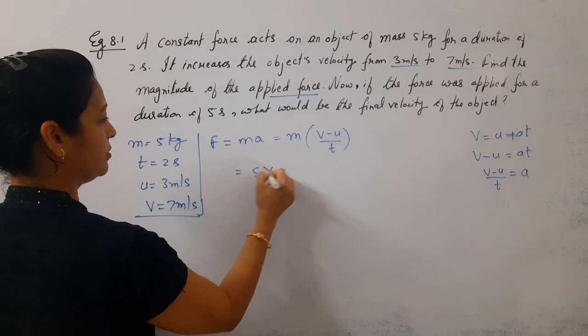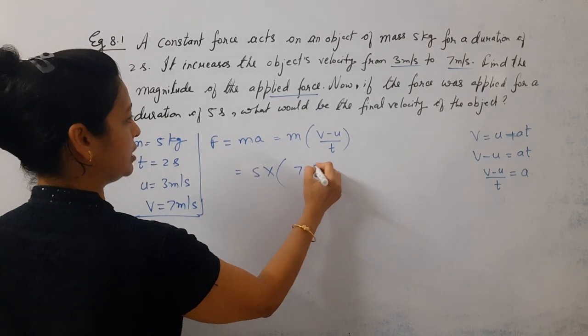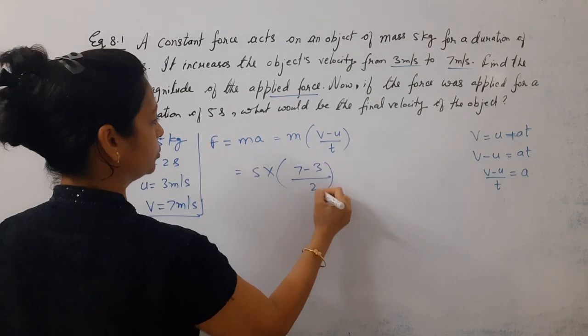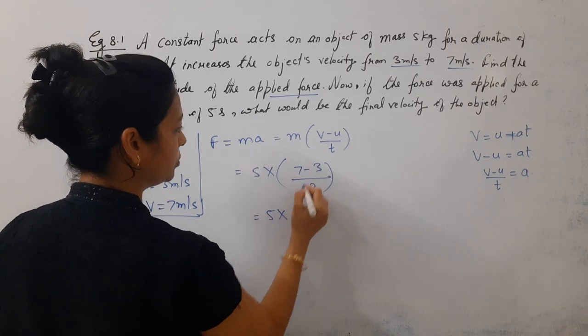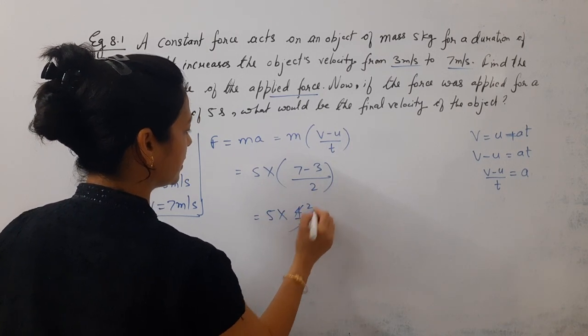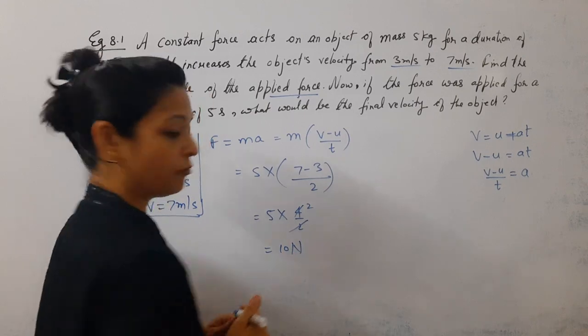Now putting values: mass is 5, final velocity 7, initial 3, upon T which is 2. Solving this, 5 times 4 upon 2, which becomes 10 upon 2. Canceling gives us 10 Newton force.